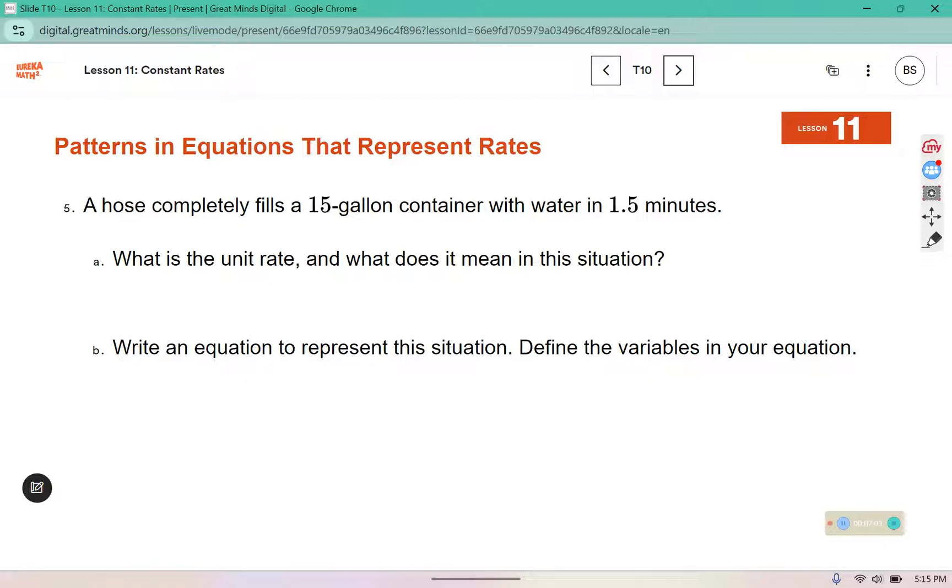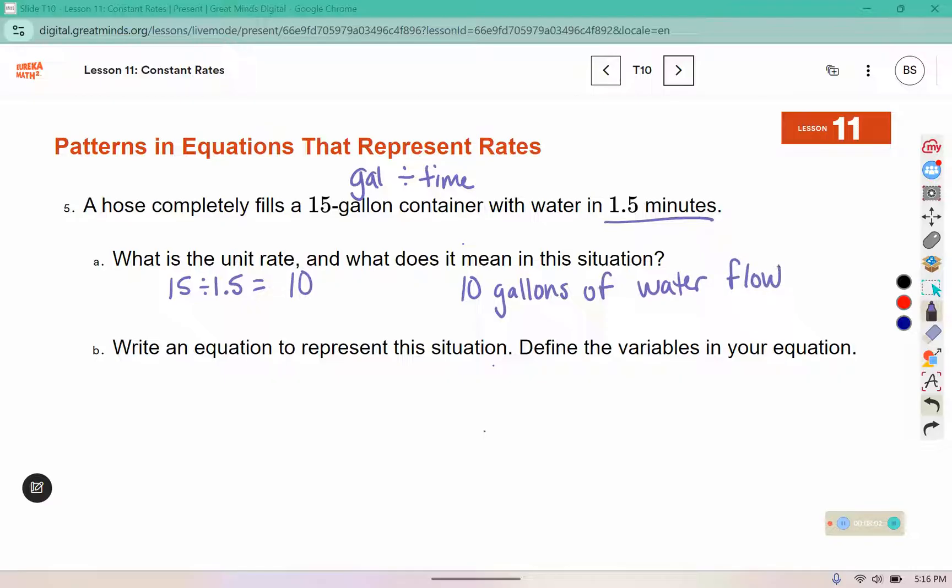A hose completely fills a 15 gallon container with water in 1½ minutes. What is the unit rate, and what does it mean in this situation? When we have time, typically to find a unit rate, we're going to divide the first quantity by the time. 15 divided by 1.5. I notice those have the same numbers in them, the only difference is where the decimal is, which means it's going to be a multiple or a power of 10. 15 divided by 1.5 is 10, and that means 10 gallons of water flow through the hose each minute.